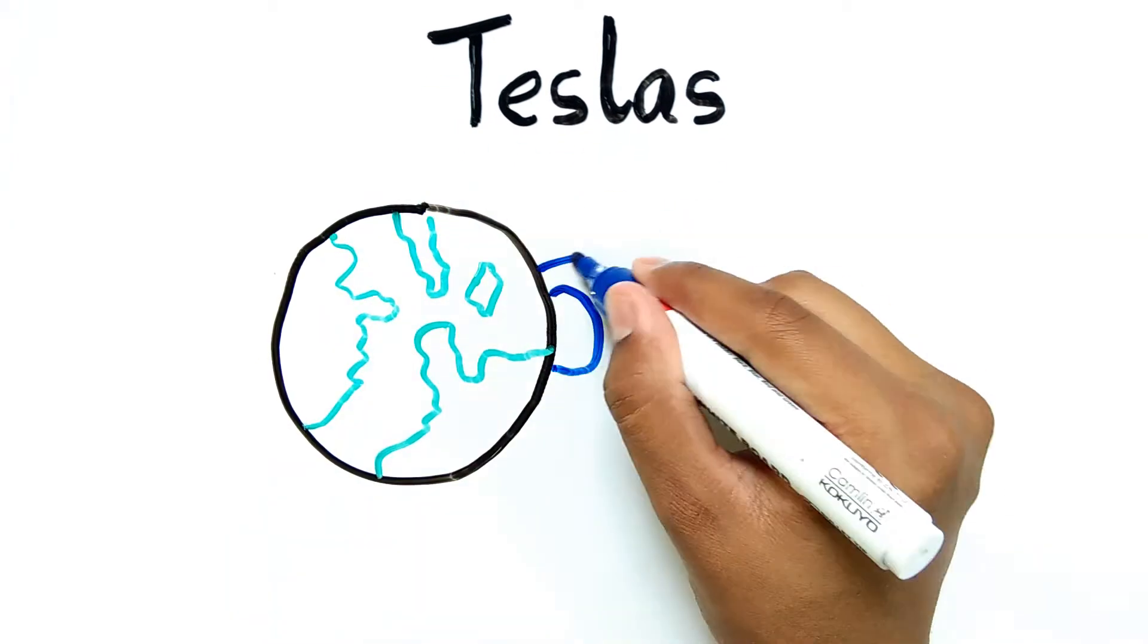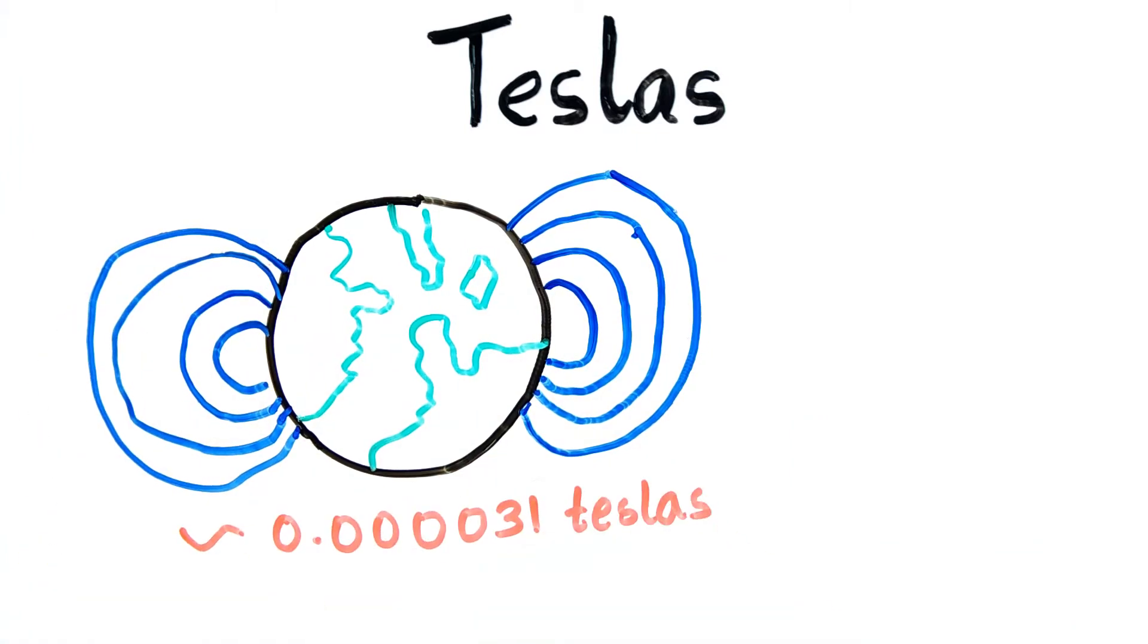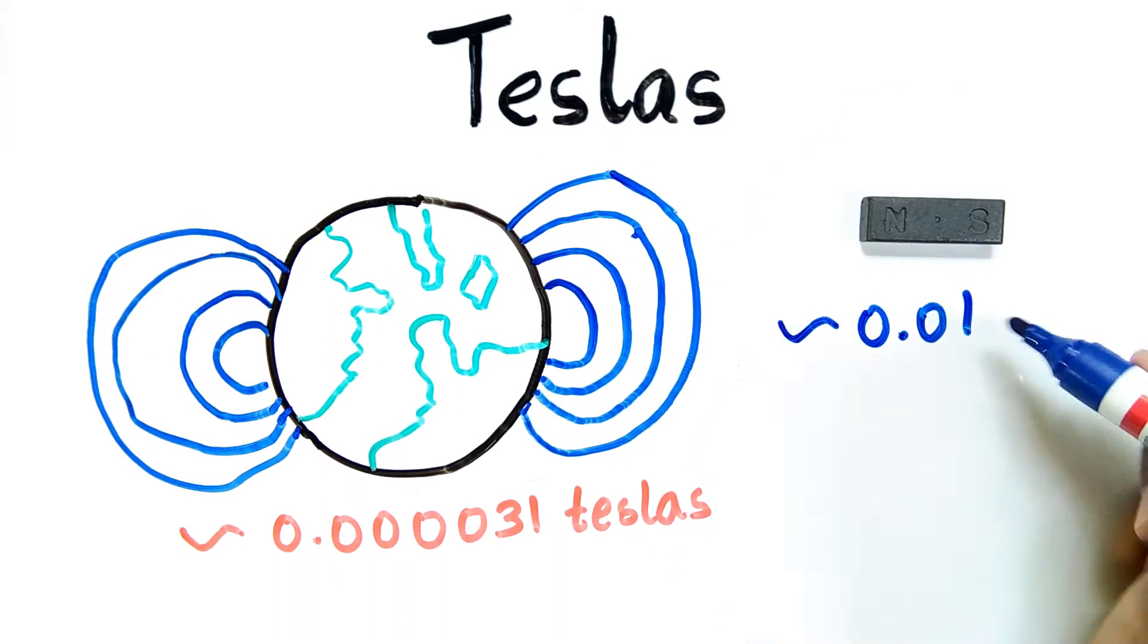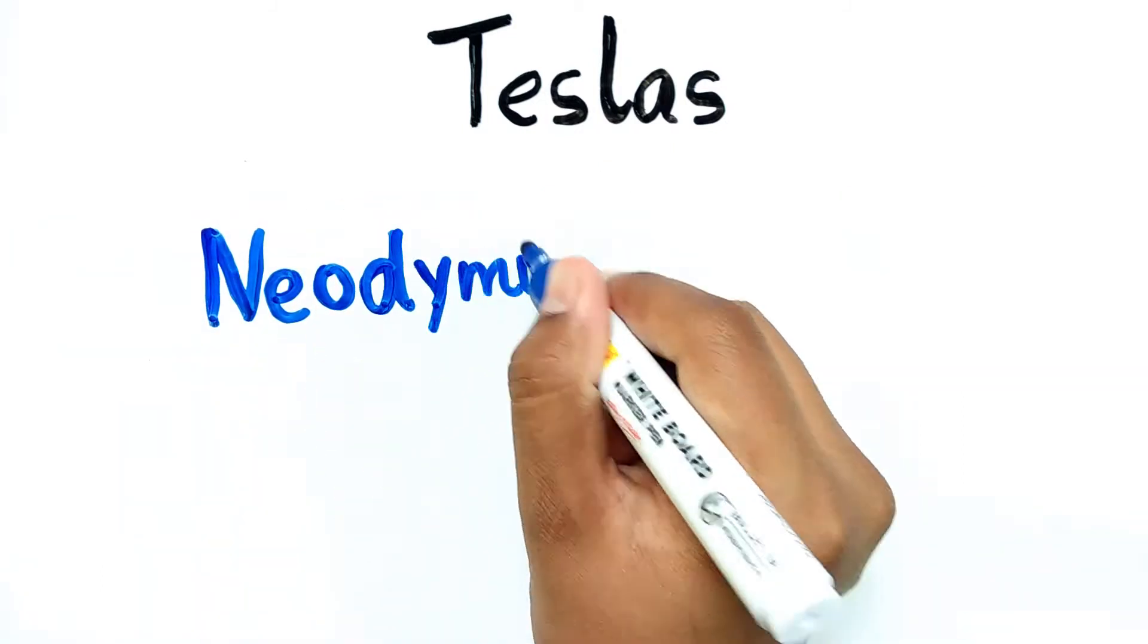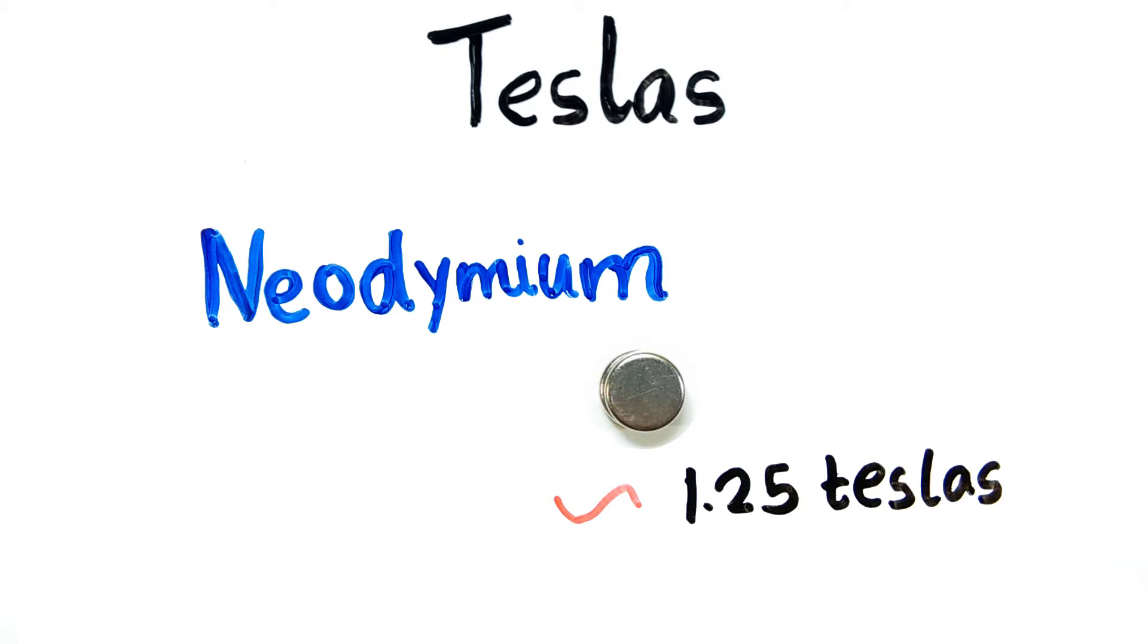Just to get an idea of how strong a tesla is: our Earth also has a magnetic field which has a magnetic flux density of around 31 microteslas. In comparison, an ordinary bar magnet has a flux density of around 0.01 tesla, but the surface of a rare earth neodymium magnet can have a flux density of 1.25 teslas. That's very very strong.